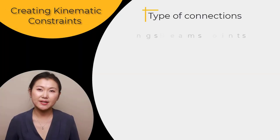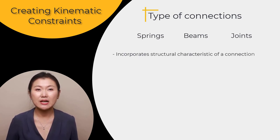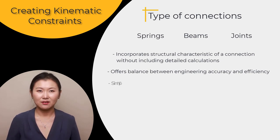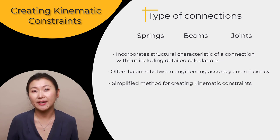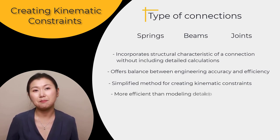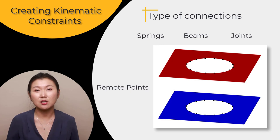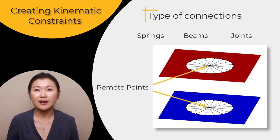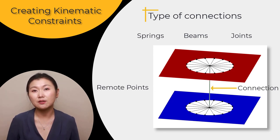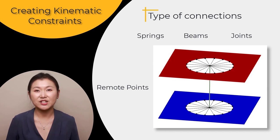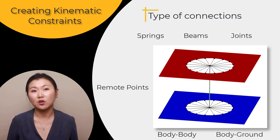Springs, beams, and joints help us incorporate the structural characteristics of a connection without the need for detailed calculations, thereby providing a balance of engineering accuracy and efficiency. Although these connections provide a simplified method for creating kinematic constraints between parts, it is much more efficient than modeling the detailed parts with contact. In all of these connections, we make use of remote points in Mechanical, reducing multiple degrees of freedom of scoped geometry to a single node or remote point with up to 6 degrees of freedom — 3 translational and 3 rotational. We can then join together two remote points with a spring, beam, or joint connection. These connections can either connect two bodies together or connect a body to ground.